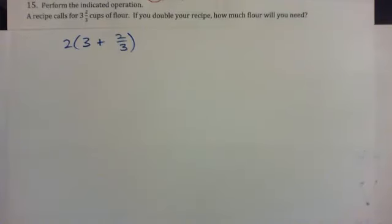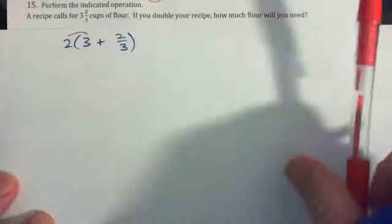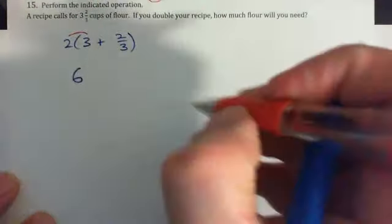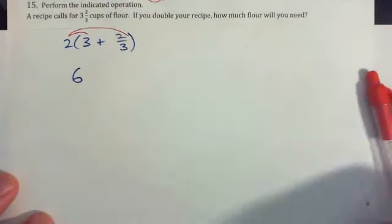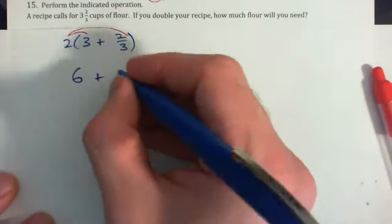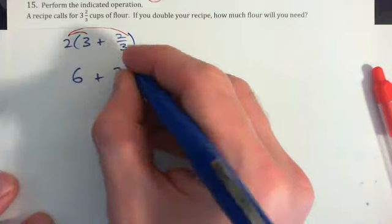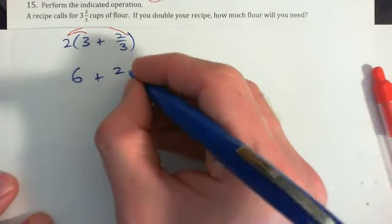We're going to double this, right? So we can go two times three is six, and then two times the two-thirds. And that would be two times two-thirds.